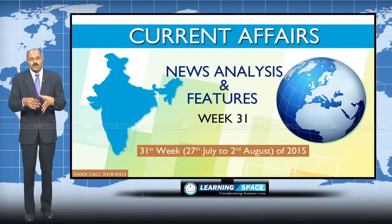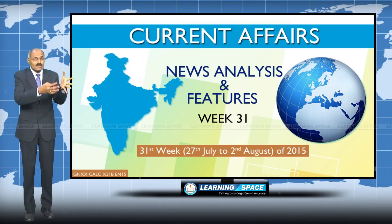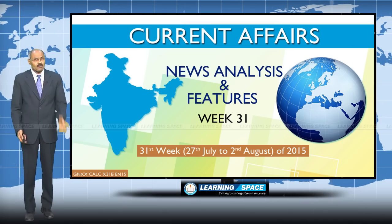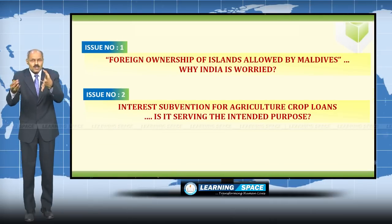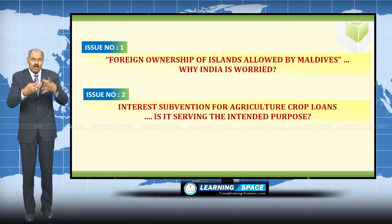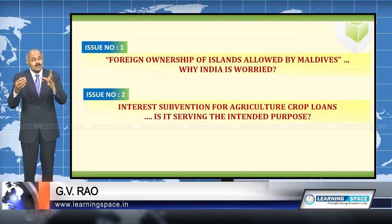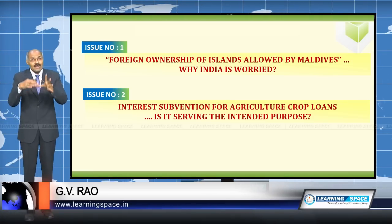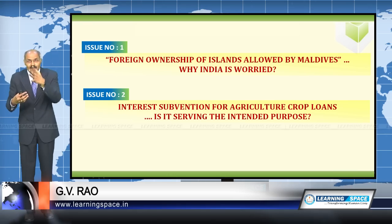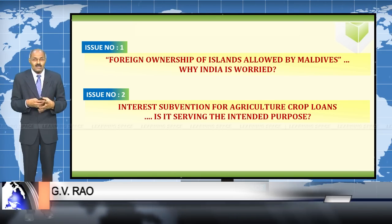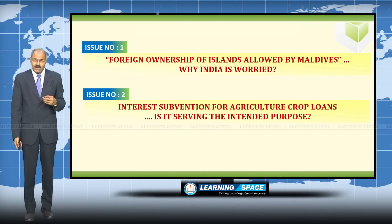Welcome back to news analysis and features. This is the 31st week, covering 27th July to 2nd August. We are going to discuss two important events: foreign ownership of islands allowed by Maldives and why India is worried, and second, interest subvention for agriculture crop loans — is it serving the intended purpose?